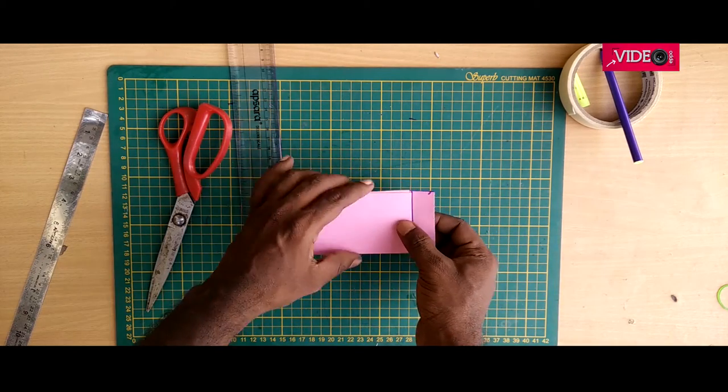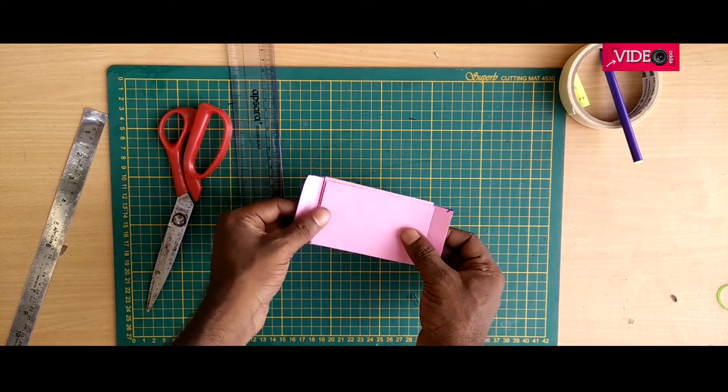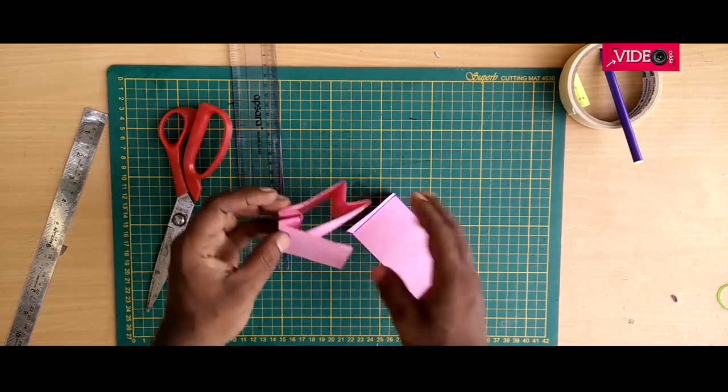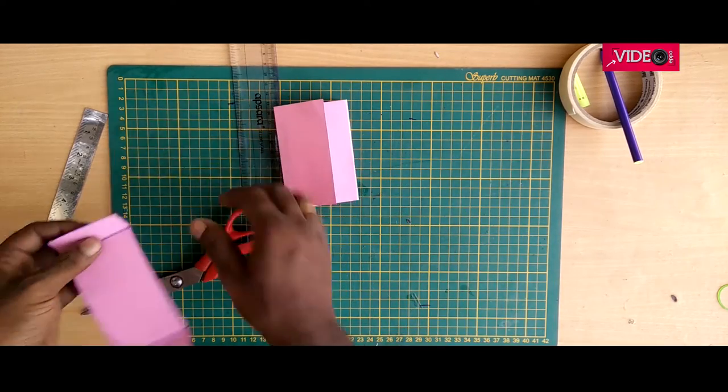Slide the smaller strips and fold on the mark. Now take it out and keep the big one aside. Now fold the smaller strip in half.